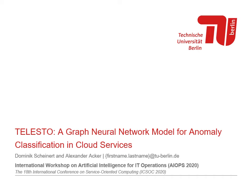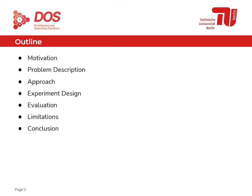Hello, welcome to my talk about the paper titled 'Telesto: A Graph Neural Network Model for Anomaly Classification in Cloud Services.' This is a joint work with my colleague Alexander Acker, presented at the AIOps workshop co-located with the International Conference on Service-Oriented Computing. Here I present the outline: motivation, problem description, envisioned approach, experiment design, evaluation, limitations, and conclusion.